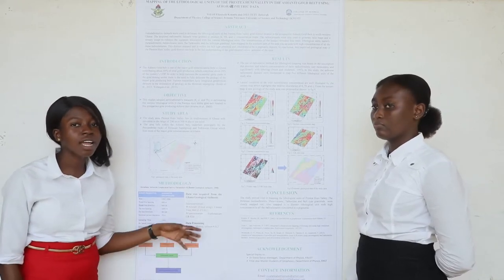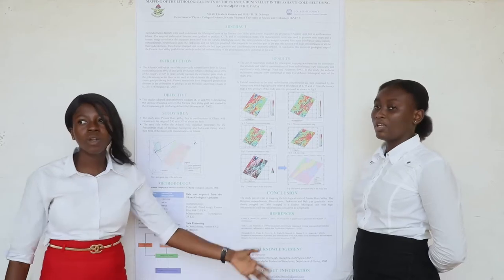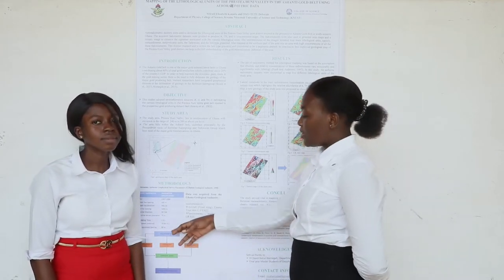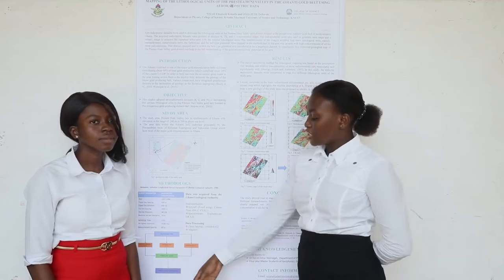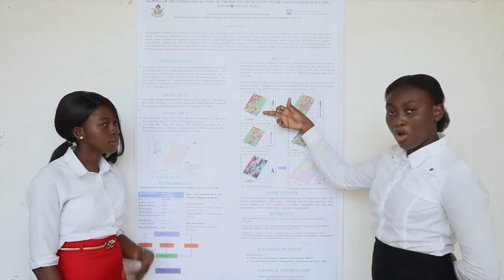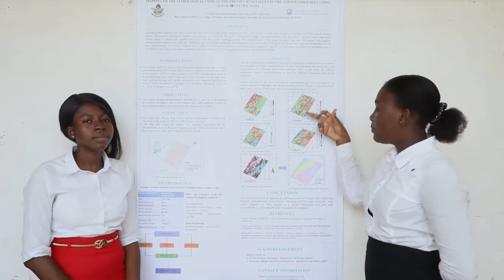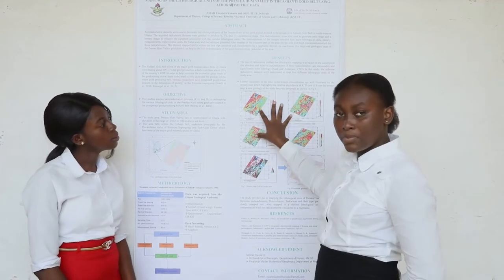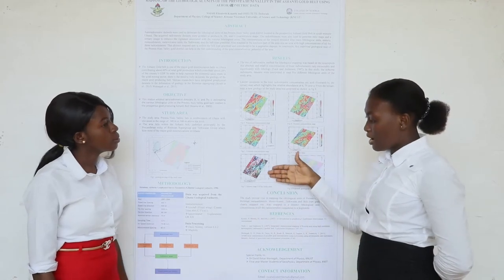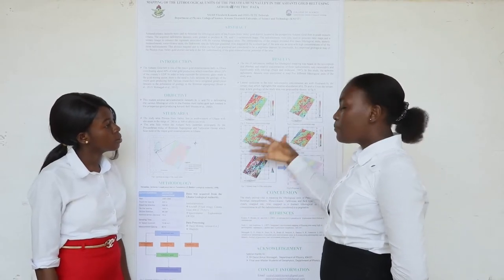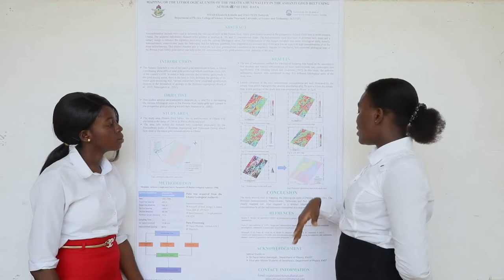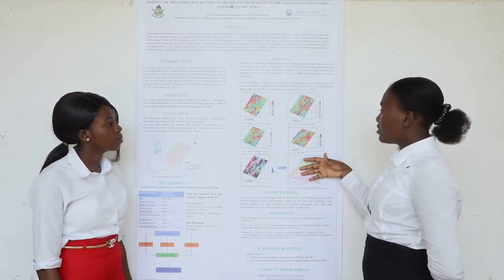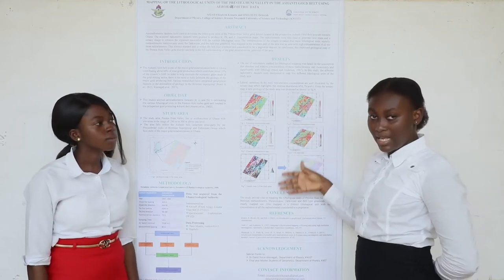From the aeroradiometric data sets, we are able to generate a potassium concentration map, a thorium concentration map, and a uranium concentration map. We combine all these three maps to get our ternary map, which we then interpret to generate a proposed geology of the area. This is the new geology generated based on geophysical data sets.